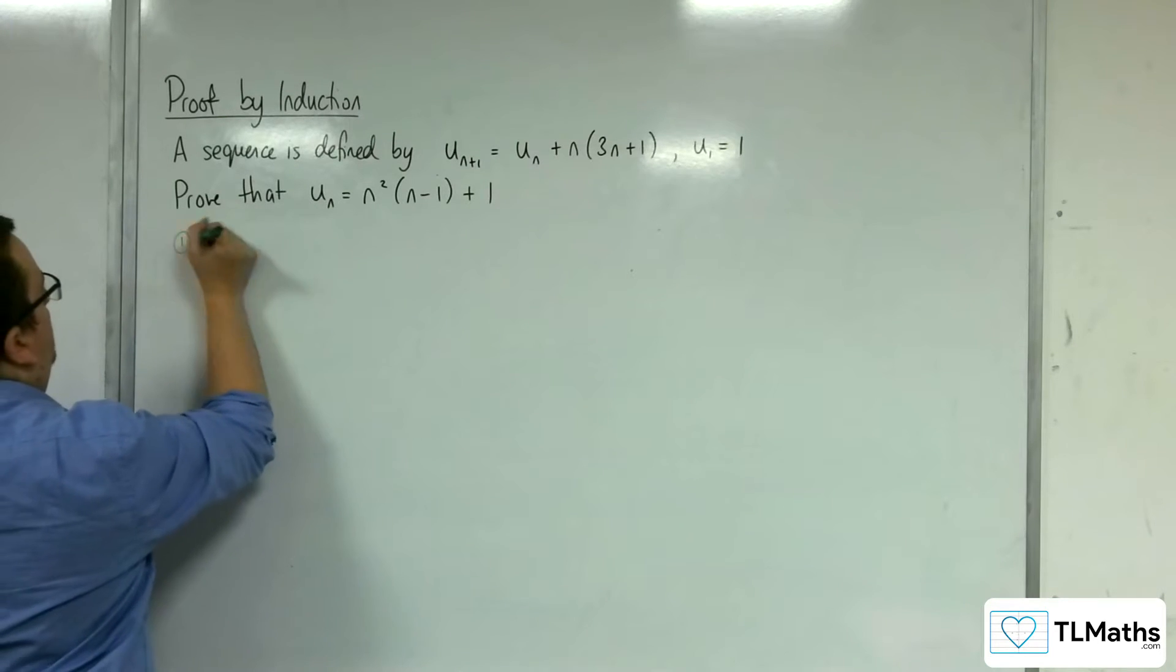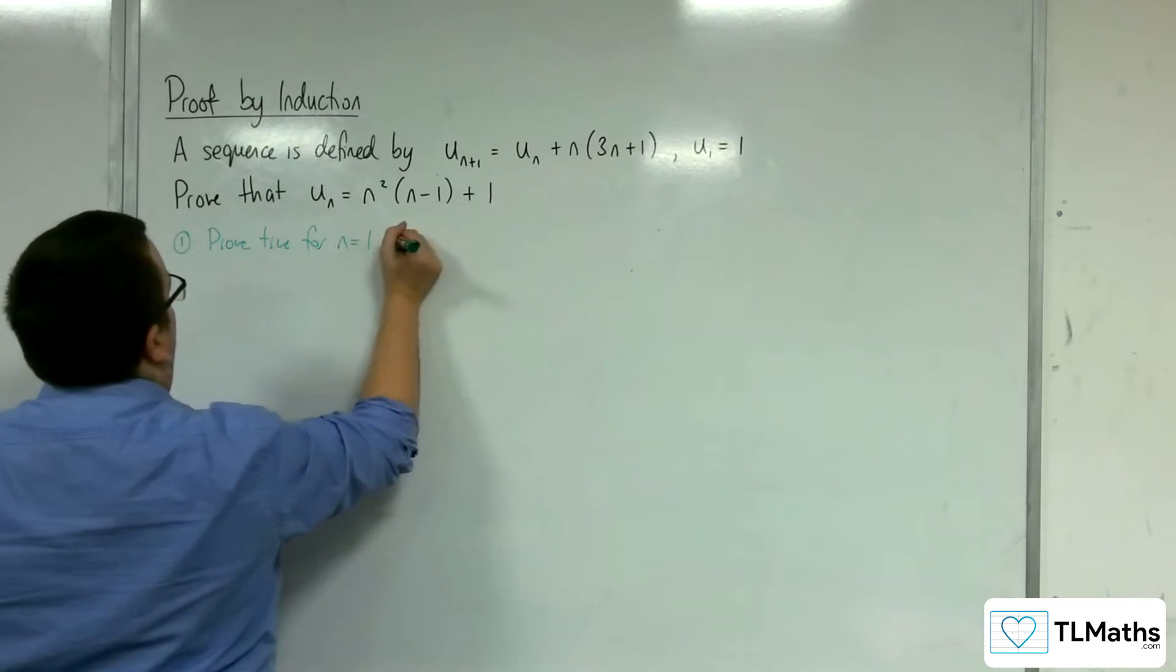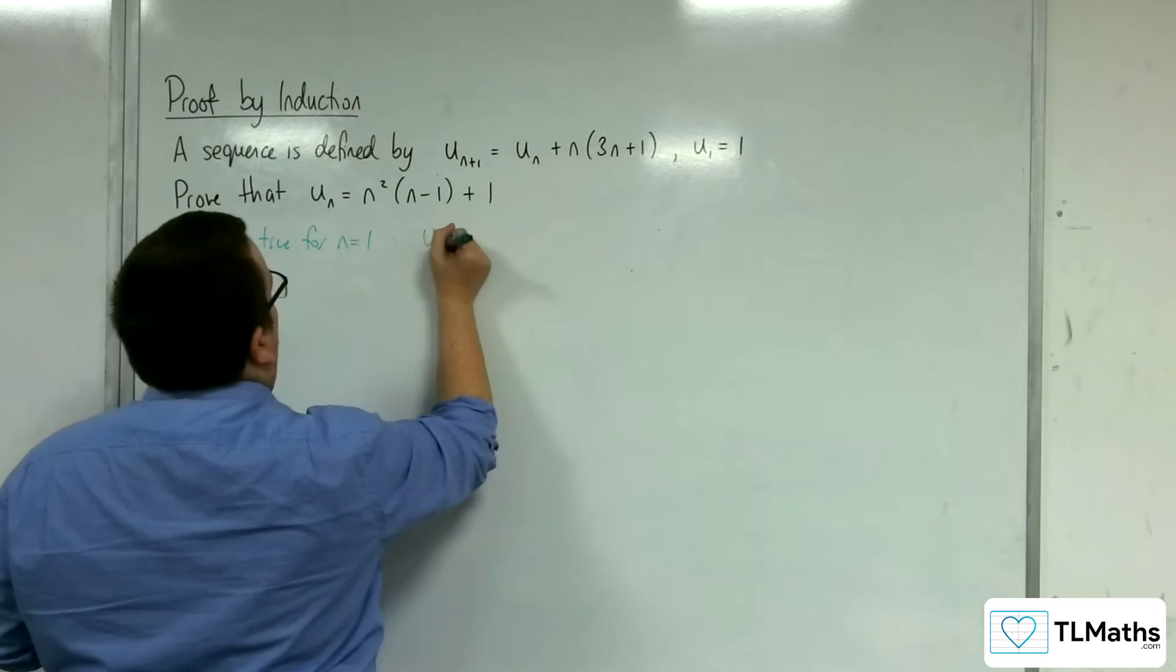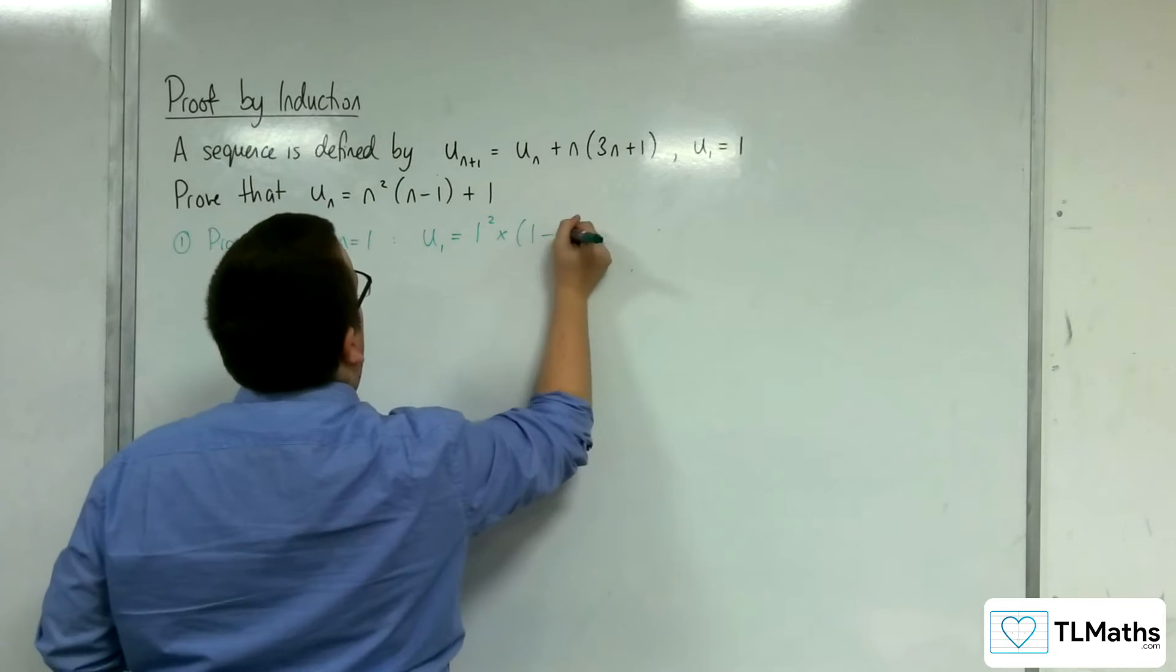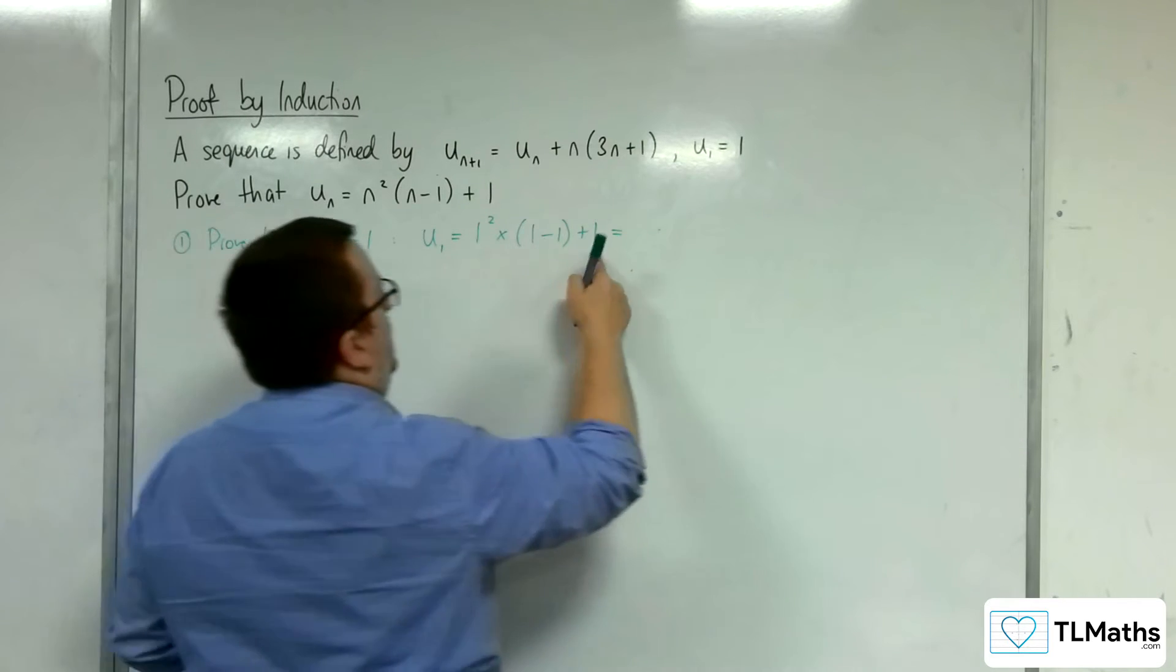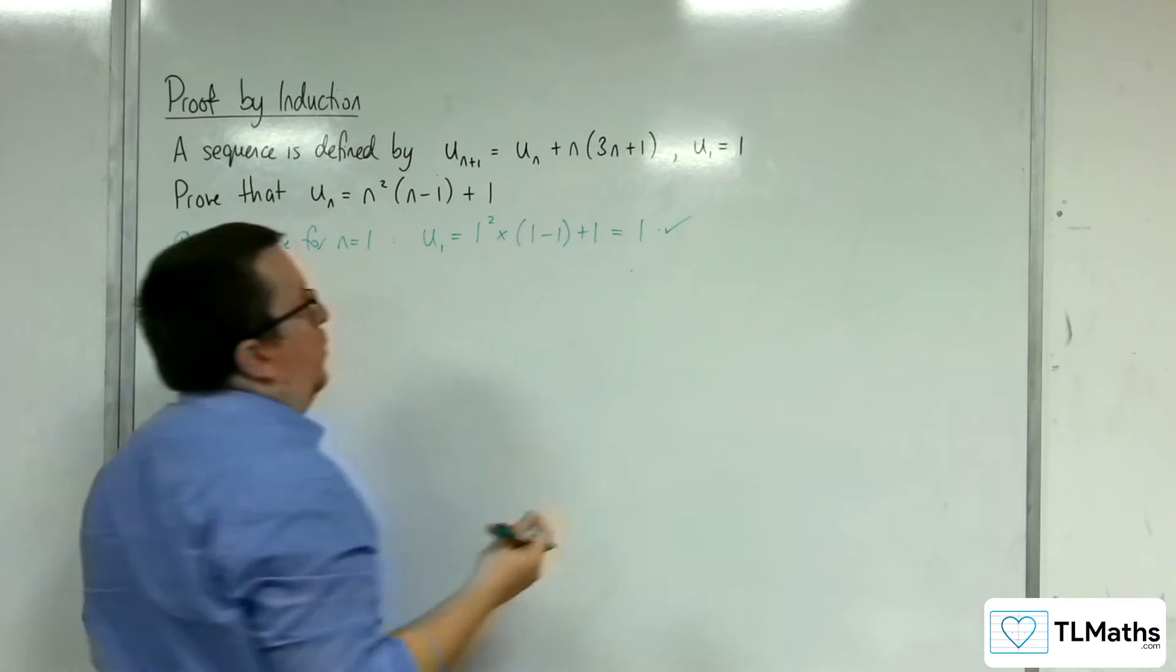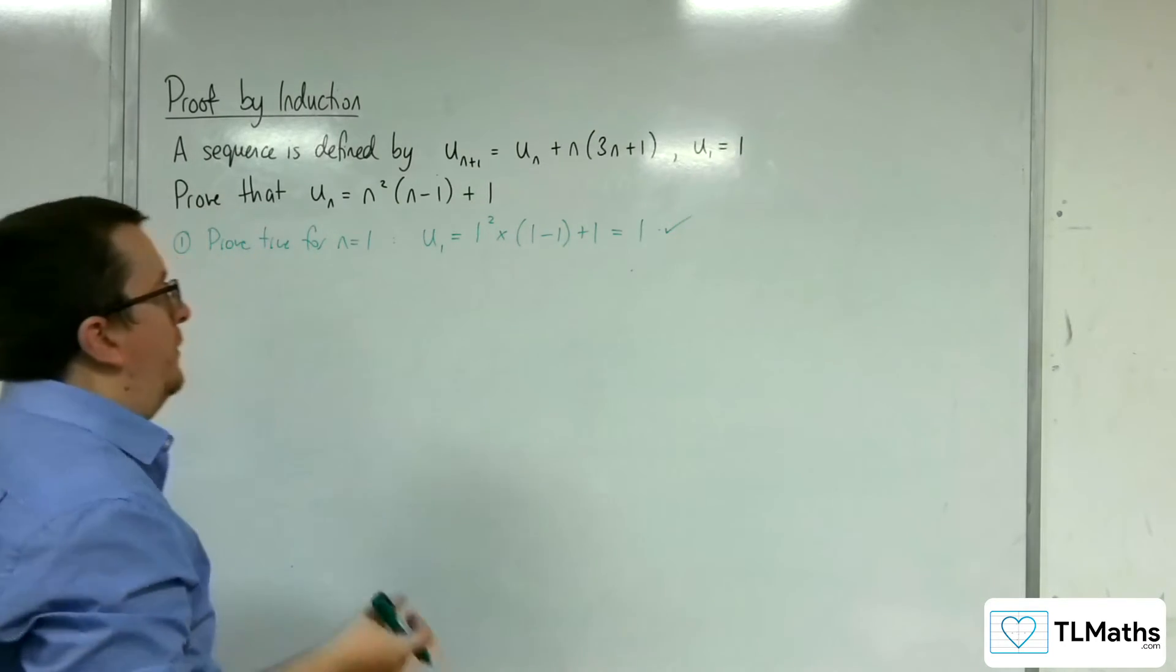Stage 1: Prove true for n equals 1. So u_1 will be 1²(1-1) + 1. Well, that's 1 times 0 plus 1, which is 1, and that corroborates that u_1 is 1, given to us. So that's fine.